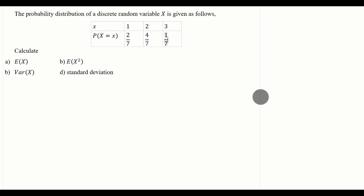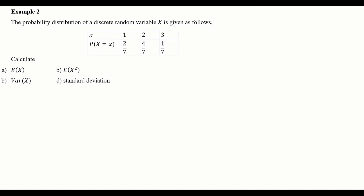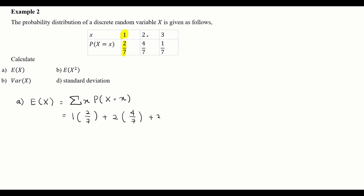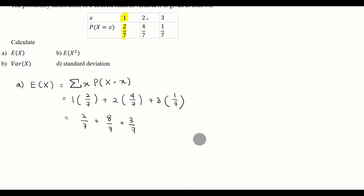We answer the first question: the expected value of X, E(X). The formula for expected value of X is the summation of X multiplied by its corresponding probability. So we have: 1 times 2/7, plus 2 times 4/7, plus 3 times 1/7. This equals 2/7 plus 8/7 plus 3/7, which equals 13/7.